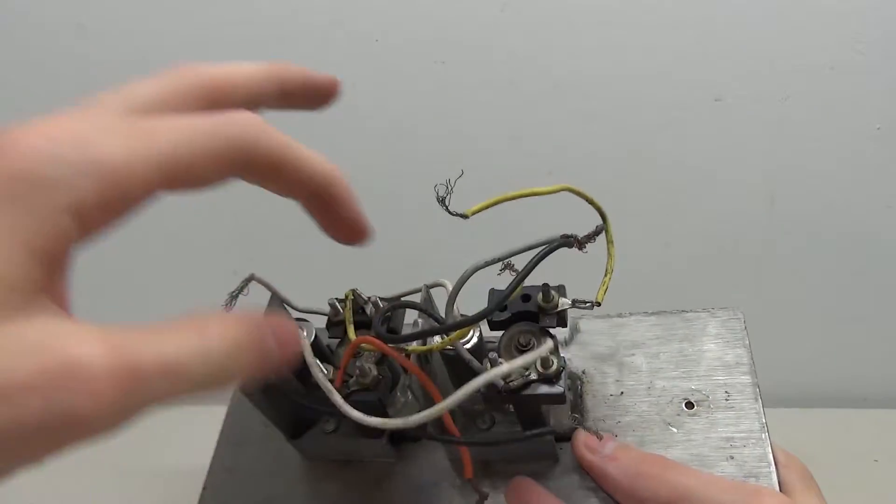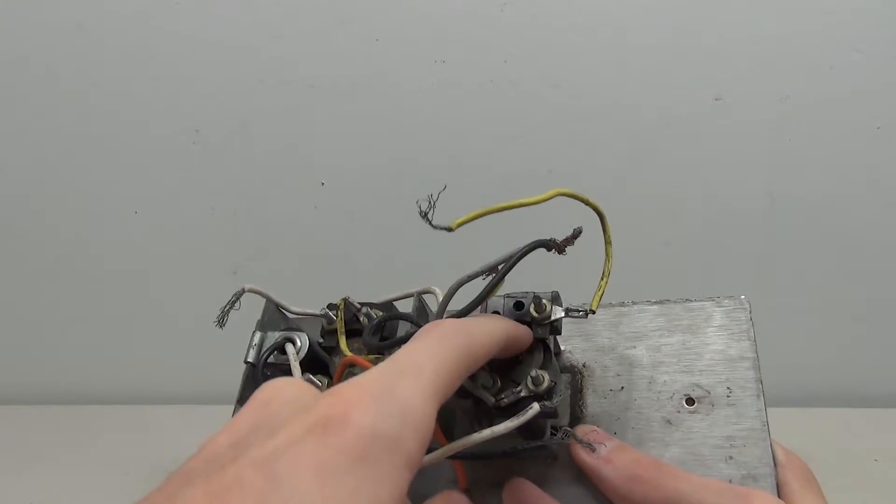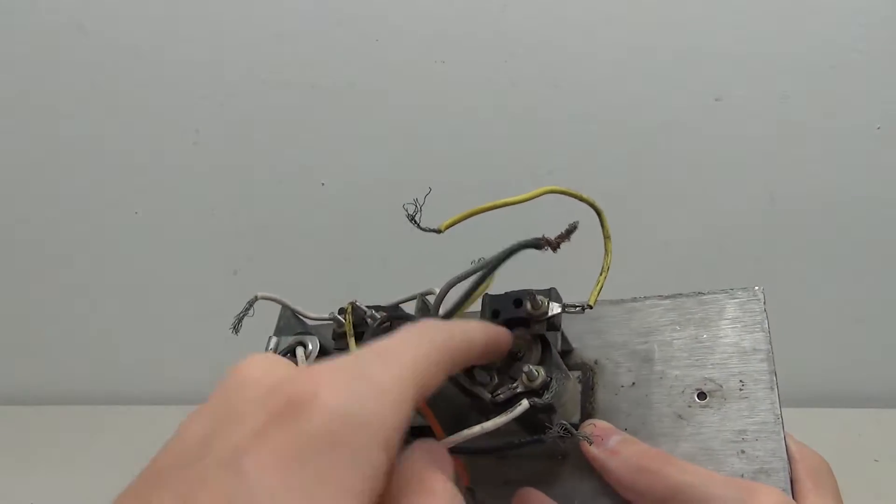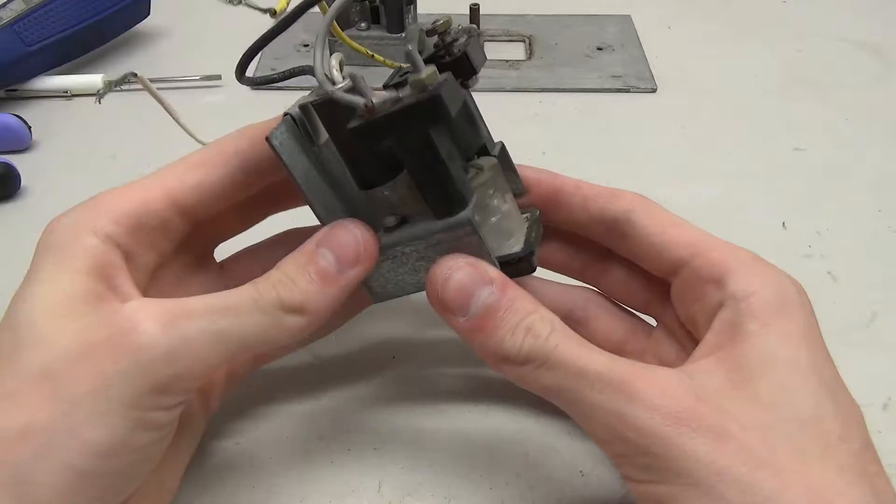The first step: we're going to remove all of the wires and take this button apart to see if we can fix it up a little bit, maybe put a new spring in there and make this button work again.